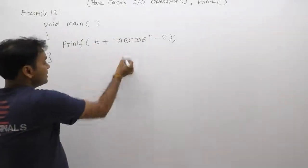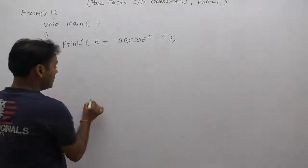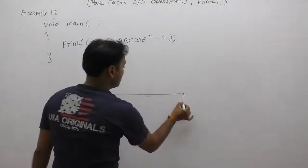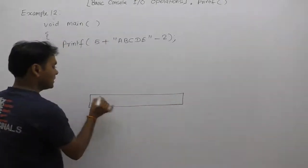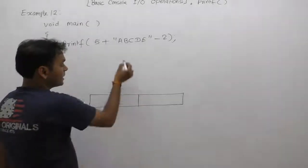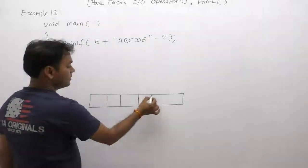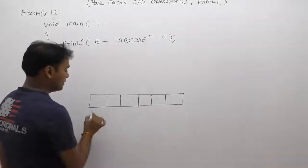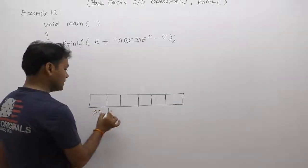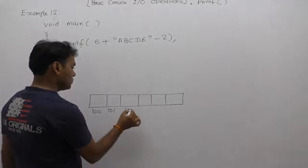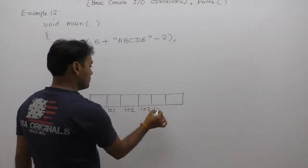First of all, we are creating some character array with size six bytes. It will take six bytes in memory. We can take any address: 101, 102, 103, 104, and 105, and so on.